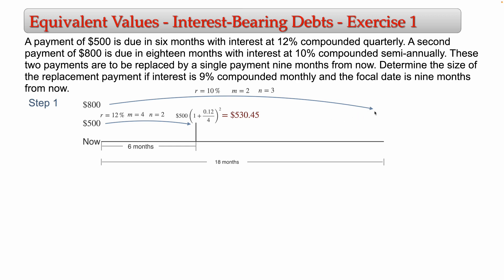The future value formula for the $800 debt: 800 × (1 + 0.10/2)^3. Computing this: 800 × (1 + 0.10/2)^3 equals $926.10. This is the amount you are scheduled to pay 18 months from now.